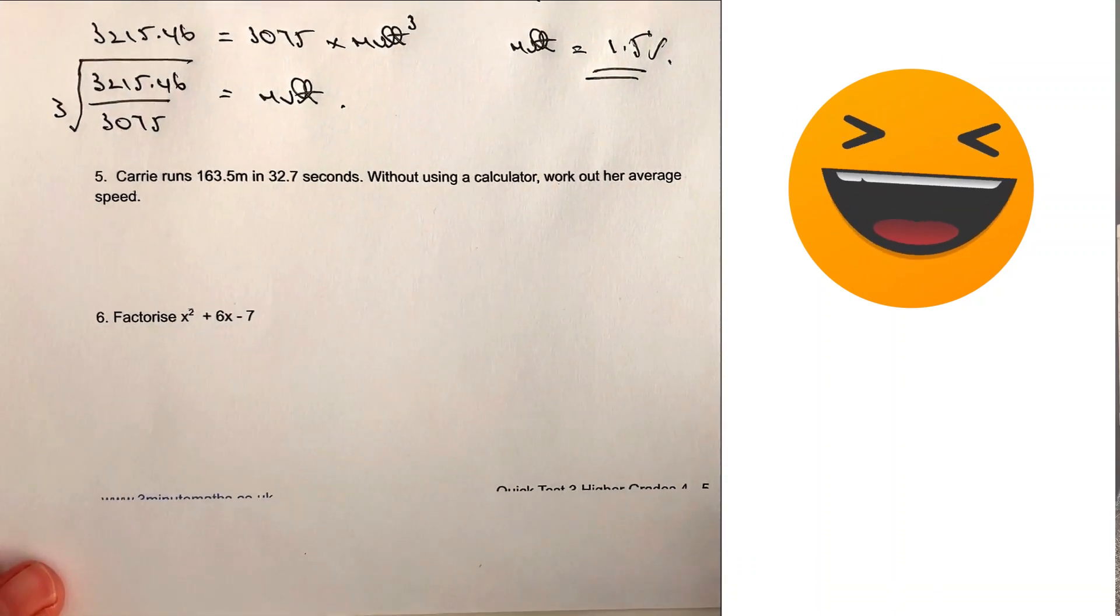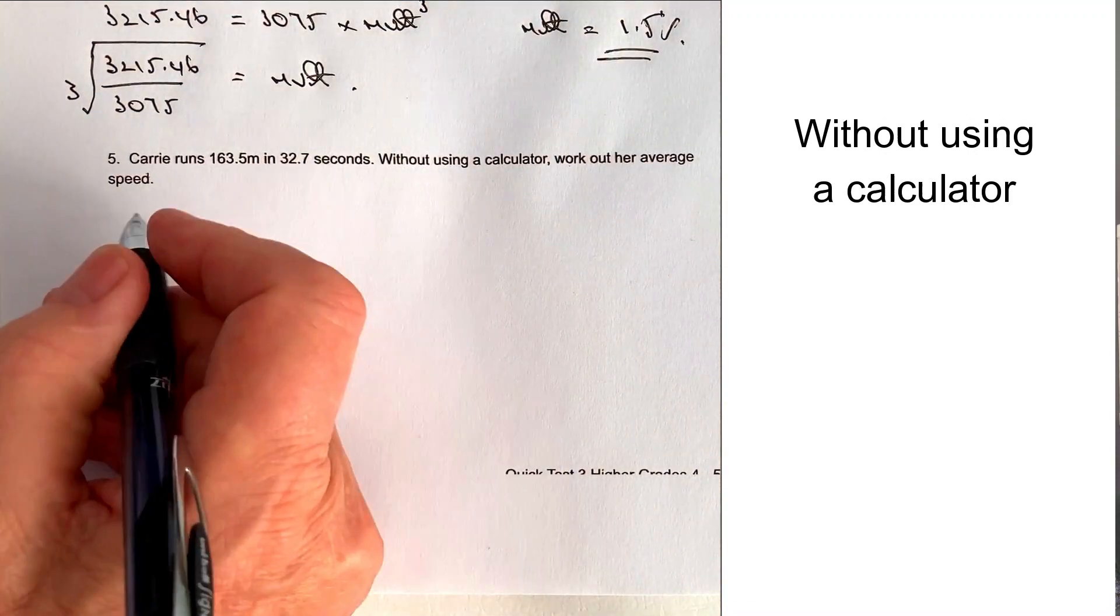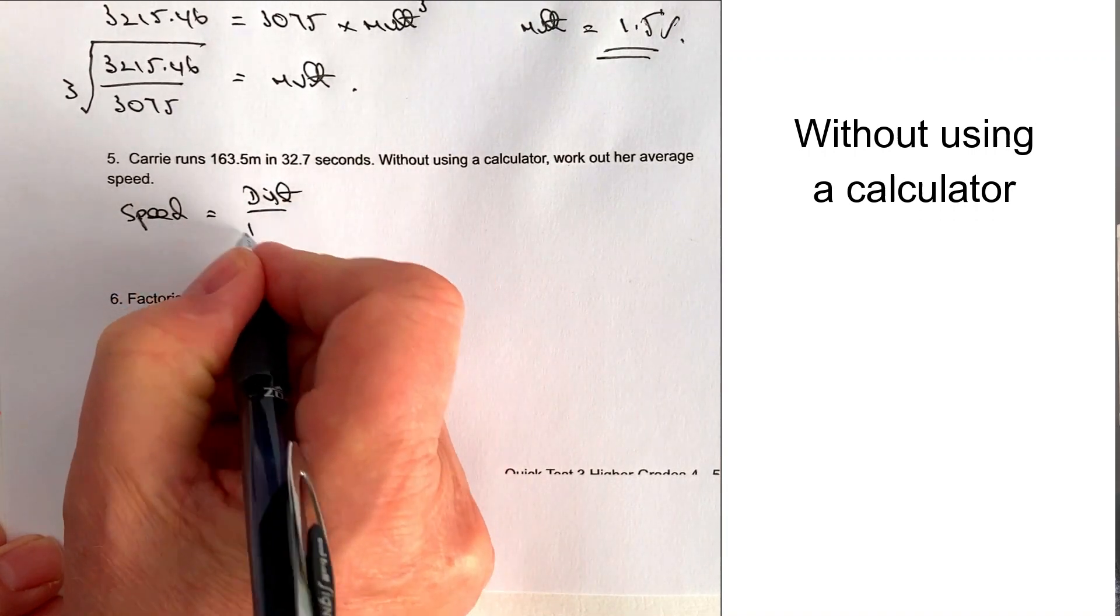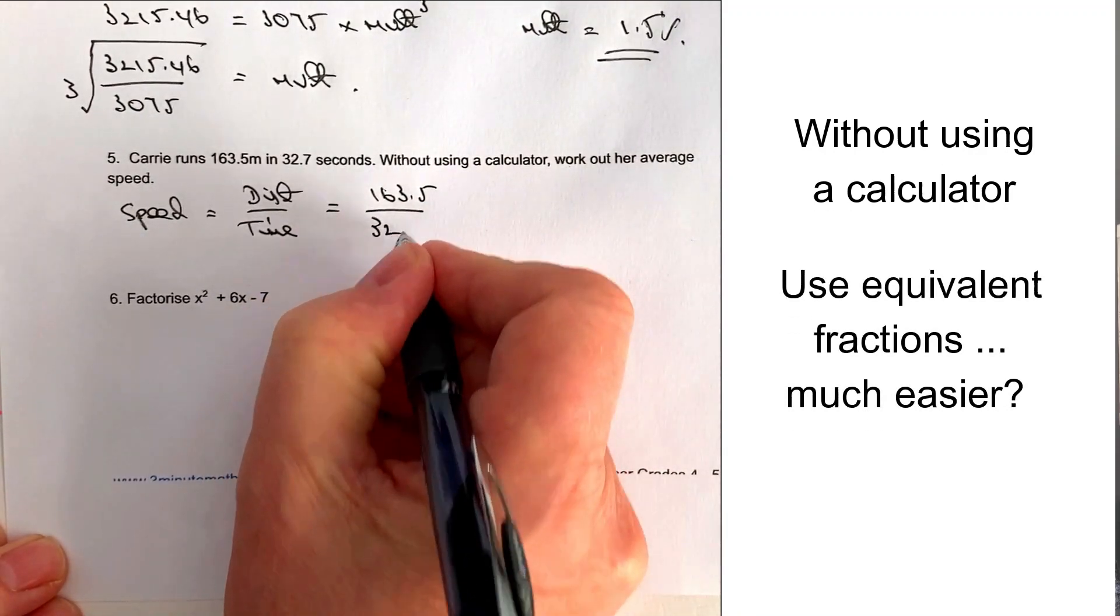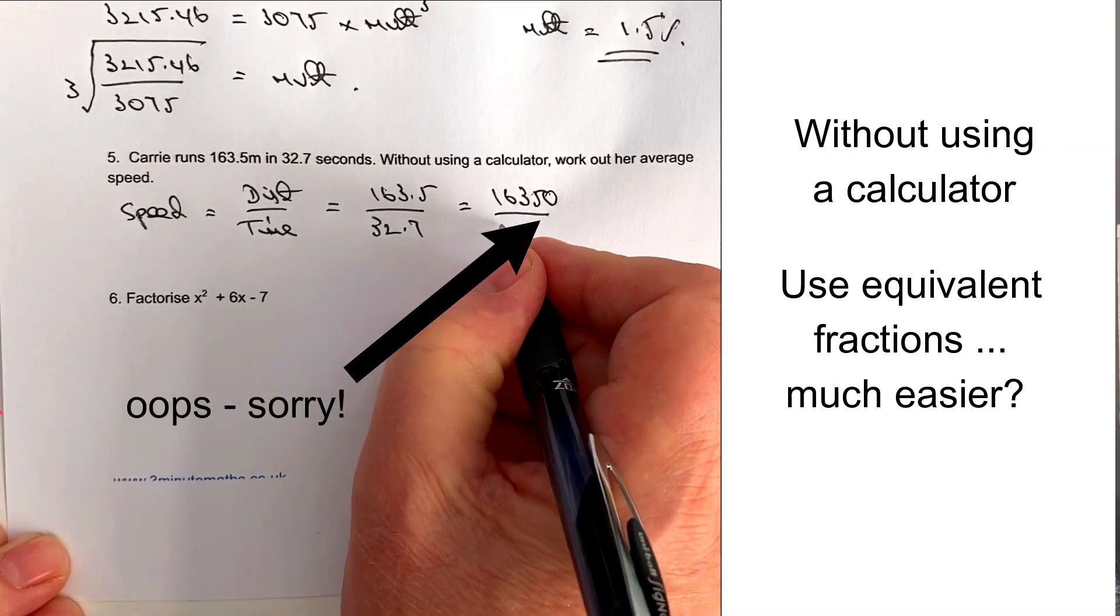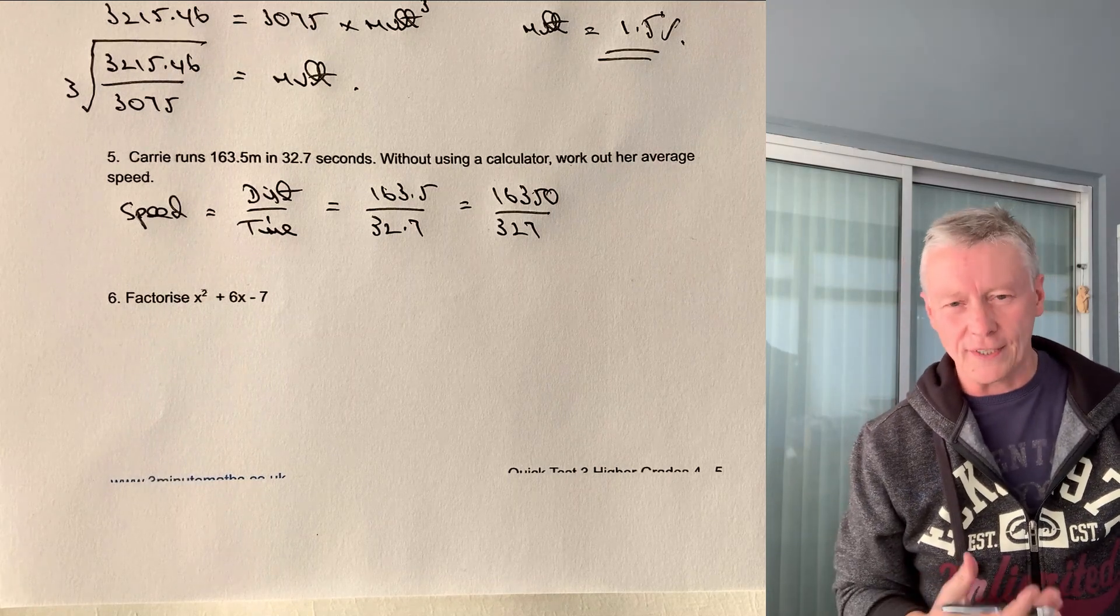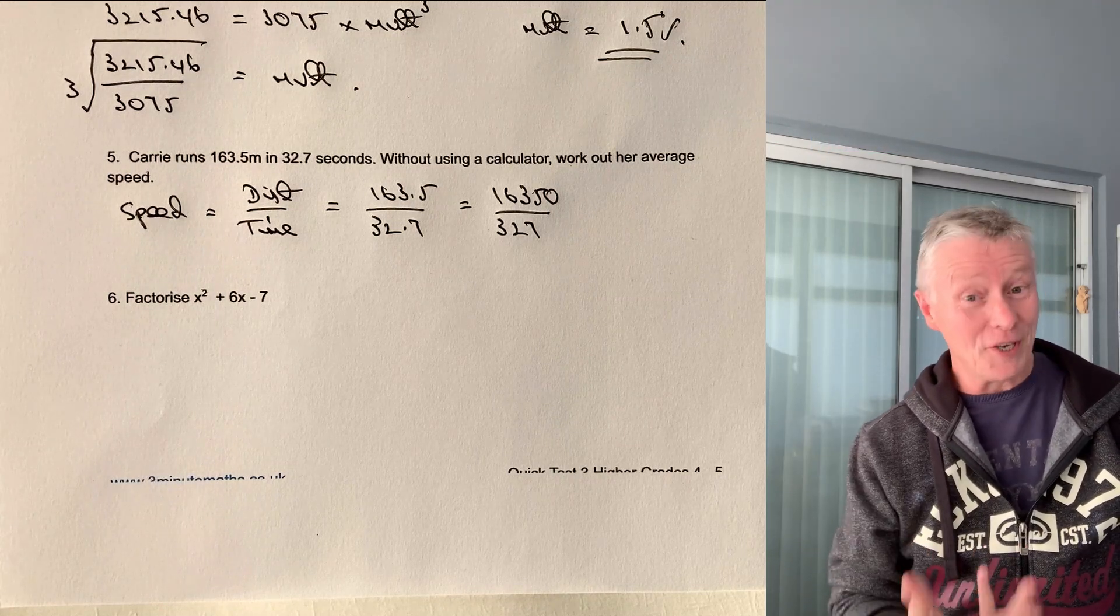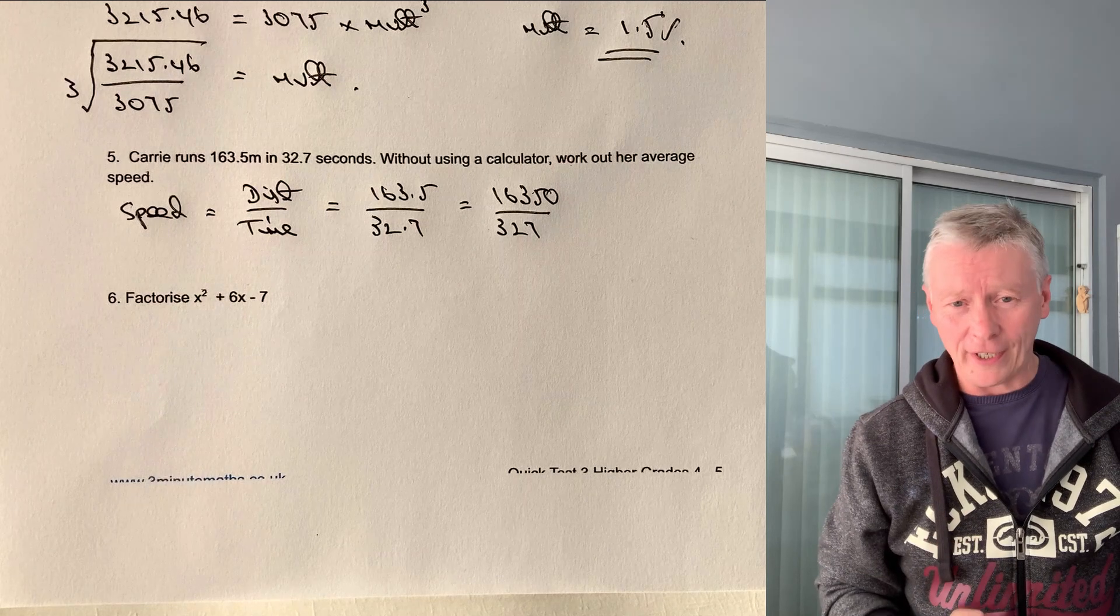Let's move on to the next question, which talks about Carrie taking a run. So Carrie runs at this type of speed. Now, the important thing with this one is without using a calculator. So what we've got to do is show her speed. Most people work out that speed equals distance divided by time. And that's perfectly fine. So really, this is more an exercise in being able to calculate this. So the way I'm going to do it is I'm going to make this 16350 divided by 327. Because when you're dealing with whole numbers, it just makes it a whole lot easier rather than trying to deal with the decimal.